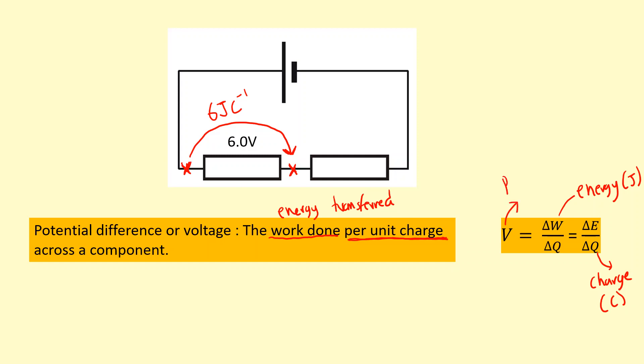Voltage or PD is measured in volts. It's the only one where the symbol for the quantity and the units has the same symbol, capital V. One volt is equal to one joule of work done per coulomb of charge. Make sure you define units in terms of units.